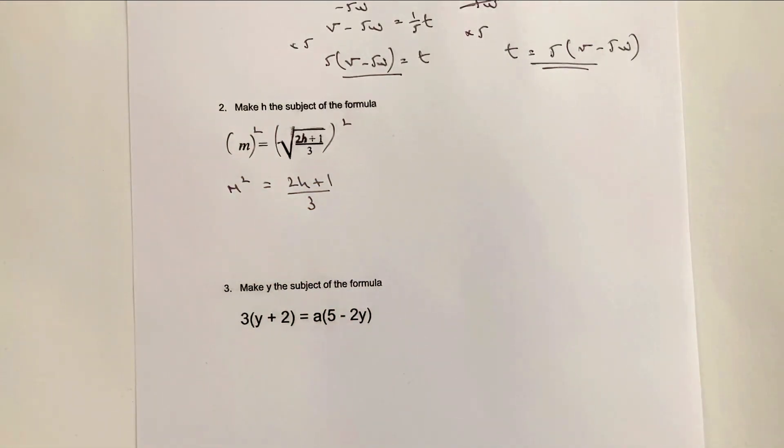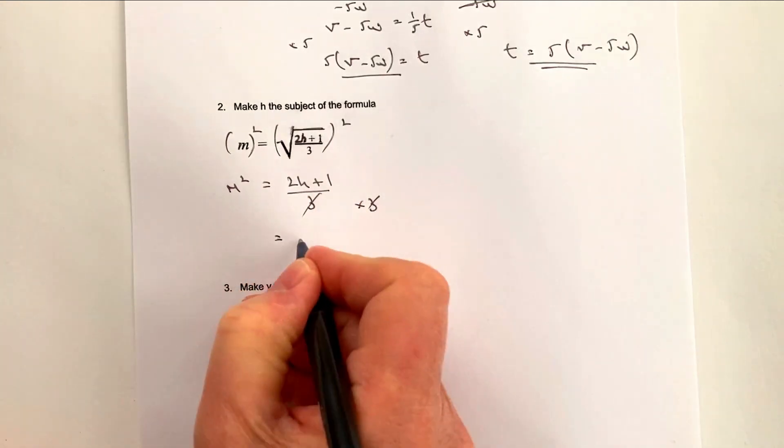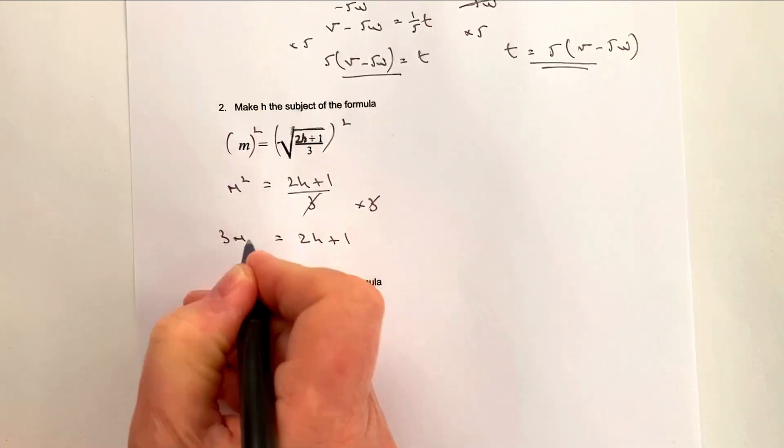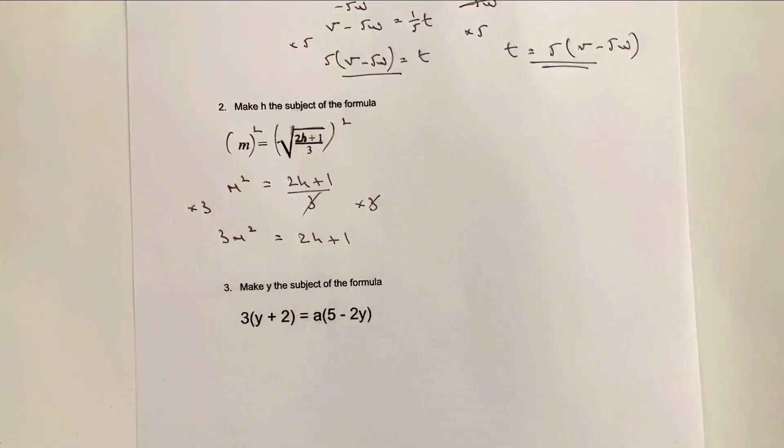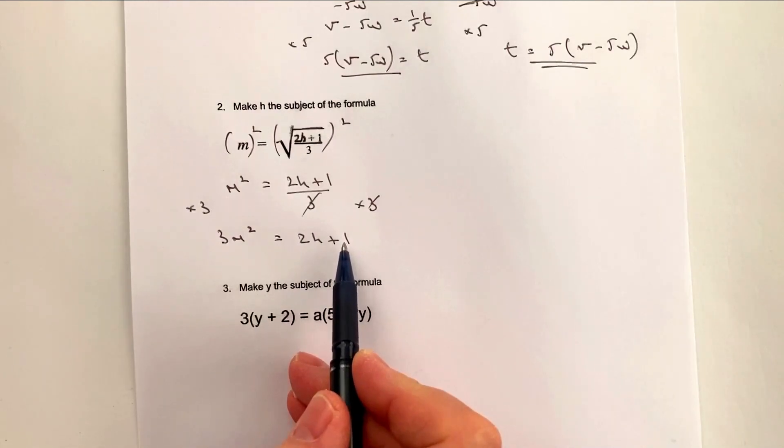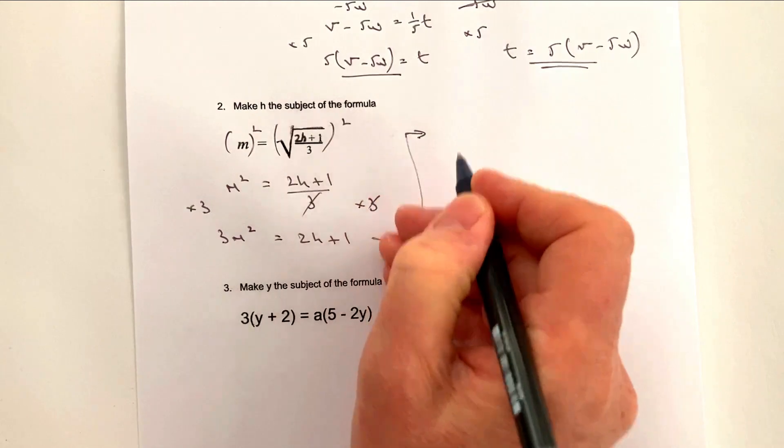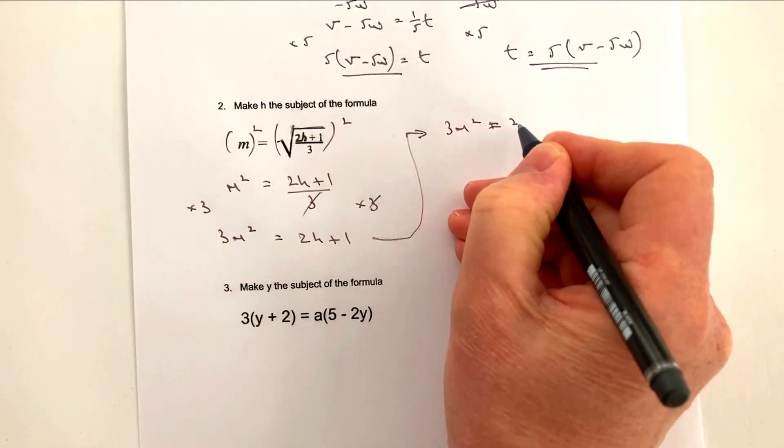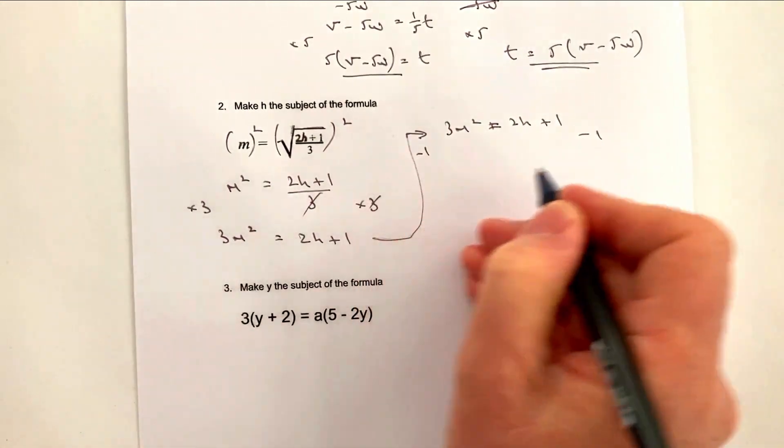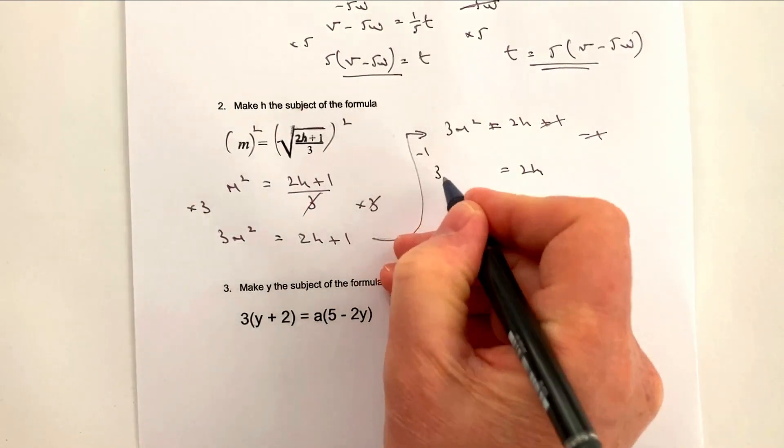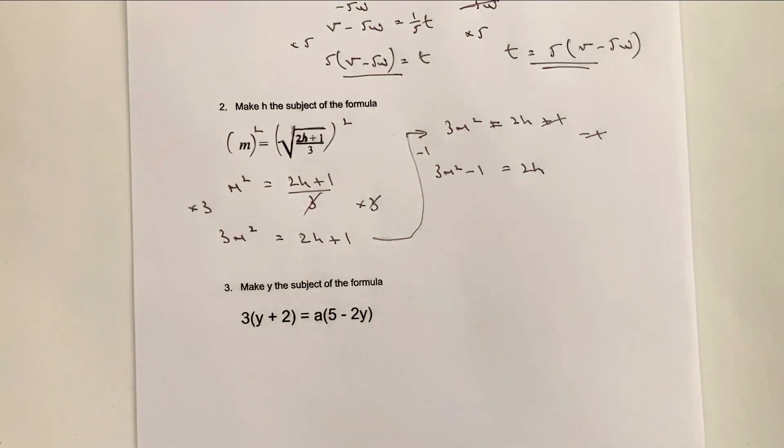Now just as we had before we've got this denominator that we need to get rid of which is this three. So what I'm going to do is multiply both sides by three because if I do that I lose that denominator and on the right hand side I get 2h plus one. On the left hand side I get 3m squared because I've always got to balance the equation. So now we're in a position where hopefully we can start to get this to the point where I've got h as the value or as the subject of the formula. So this plus one is going to cause me a problem. So I'm going to rewrite that as 3m squared equals 2h plus one. I'm going to minus one from both sides get rid of that and I've got 2h and on the left hand side I've got 3m squared minus one.